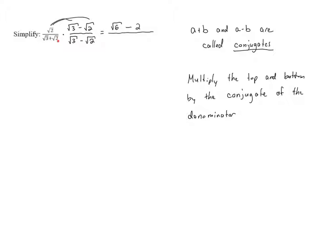In the denominator, we have two terms times two terms, so we FOIL everything out. Root 3 times root 3 equals root 9, and the square root of 9 is just 3. Root 3 times negative root 2 is negative root 6. Root 2 times root 3 is positive root 6. And root 2 times negative root 2 is negative root 4, which equals minus 2. Something useful has happened: the negative root 6 and positive root 6 cancel, since they are opposites and sum to zero.